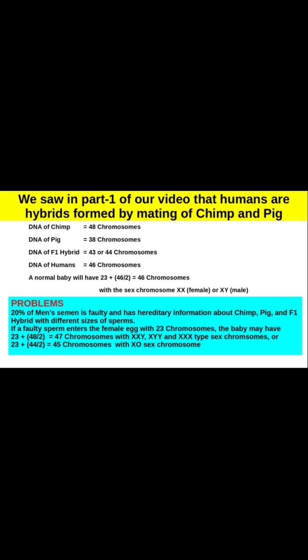As we saw in part one of our video, humans are hybrids formed by mating of chimp and pig, and then back-crossing with chimp again. DNA of chimp equals 48 chromosomes, DNA of pig equals 38 chromosomes, DNA of F1 hybrid equals 43 or 44 chromosomes, DNA of humans equals 46 chromosomes.